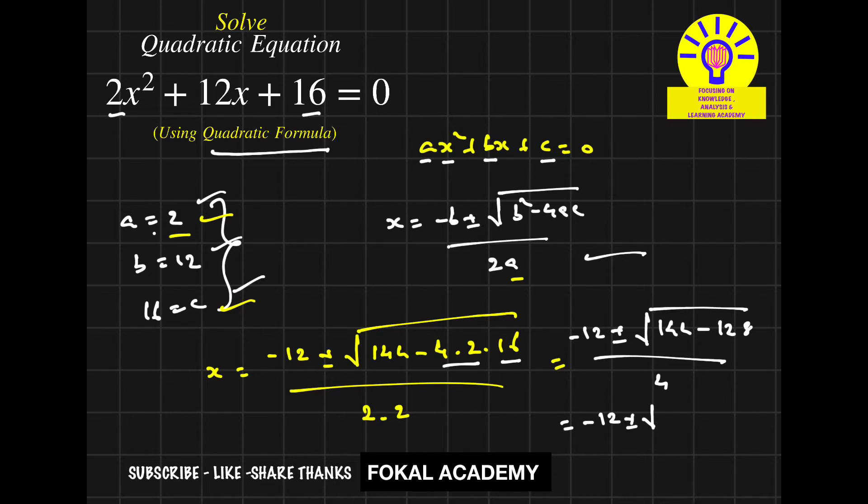Since √16 = 4, we get x = (-12 ± 4)/4. If you use plus, we'll get one root. If you use minus, we'll get another root.